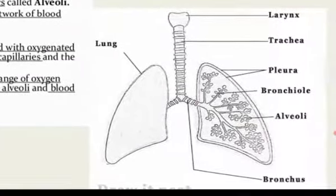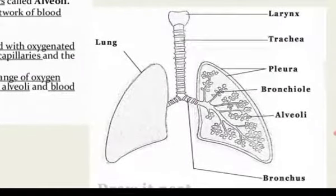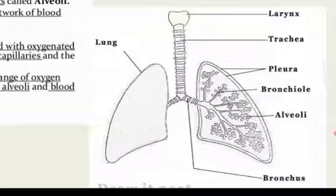Here you can see the trachea going downward, dividing into bronchi. Each bronchus enters into the lungs and divides into many small parts called bronchioles, which are finally connected with the alveoli. The alveoli is the place where the exchange of oxygen and carbon dioxide takes place.